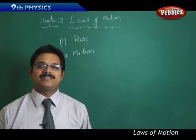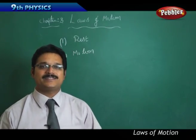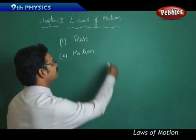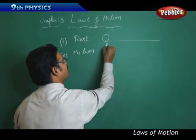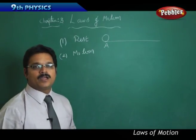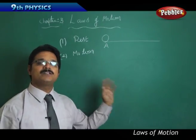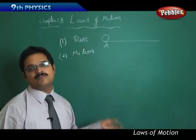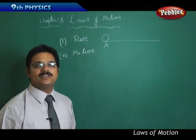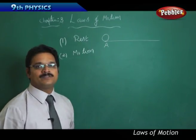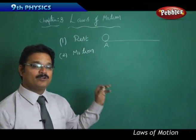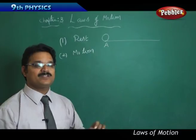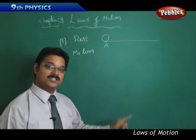then we say that object is at rest. For example, take a ball at point A. You are observing the ball at point A for a long time—two hours, three hours, one day, two days, three days—then you say that ball is at rest. Rest state is when the location is not changing with respect to time.